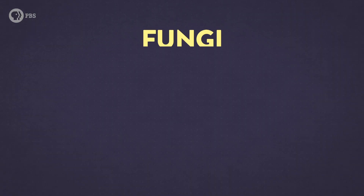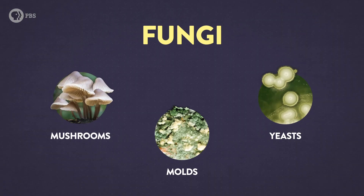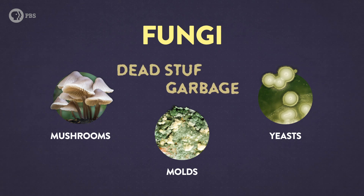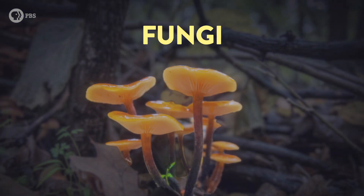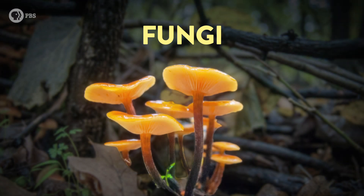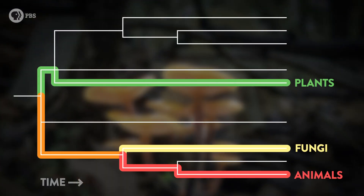Fungi are a huge domain on the tree of life, and as you've probably noticed by now, nobody knows exactly how you're supposed to say it. But I'm going to go with fungi, because that's what I am. Fungi include molds, mushrooms, and yeasts, and as a whole, they're essential to making all of Earth's organic garbage and dead stuff decompose and disappear. While some fungi do resemble plants, they are definitely not plants — they are technically more closely related to animals. But really, fungi are a form of life like no other.